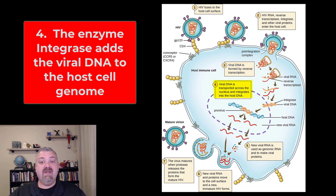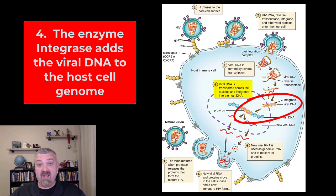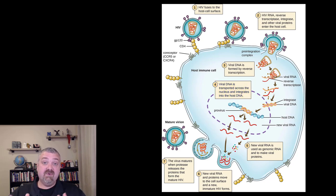Step four: viral DNA is transported into the nucleus of the CD4 positive T cell and integrates into the host DNA — that's where the enzyme integrase is used. Integrase takes the newly formed HIV viral DNA and crams it into the genetic material of the cell. Once this happens, the cell has become a factory — or at least a potential factory — for churning out HIV viruses. There is no way to save this cell. Some of these cells are latent and not actively producing viruses, but they now have the ability to do so.